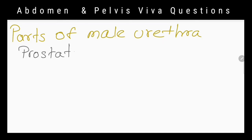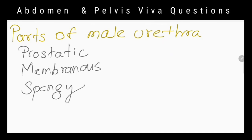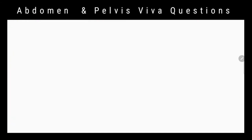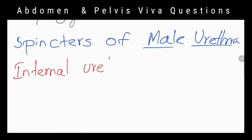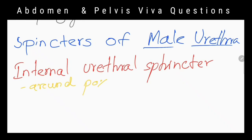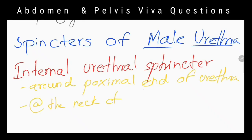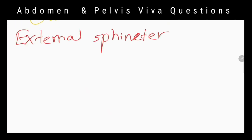What are the parts of the male urethra? Prostatic urethra, membranous urethra, and spongy urethra. What are the sphincters of the male urethra and where are they situated? The internal urethral sphincter is situated around the proximal end of the urethra at the neck of the bladder. The external sphincter is situated just inferior to the bladder.